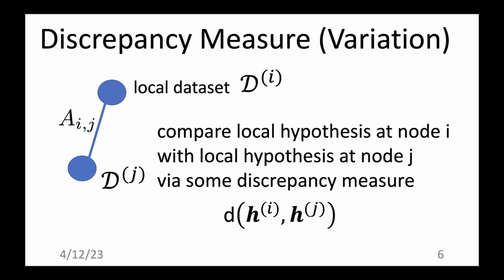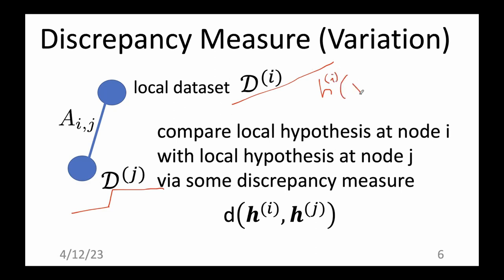After choosing the edges and weights, the next design choice is how you measure the discrepancy or variation of local models at connected nodes. Say you have a local dataset at node I and a hypothesis map, and another dataset at node J with a different hypothesis map. How do you compare them? How do you measure the discrepancy between those two hypothesis maps, each of which reads in feature vectors and outputs a prediction?